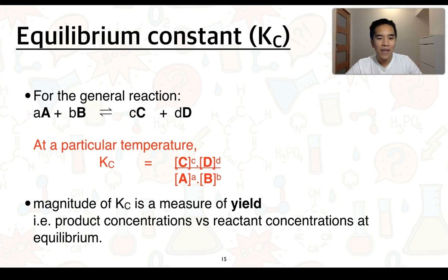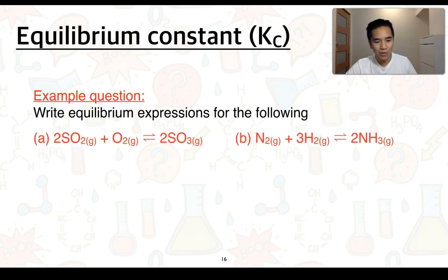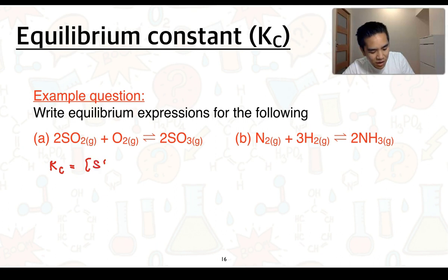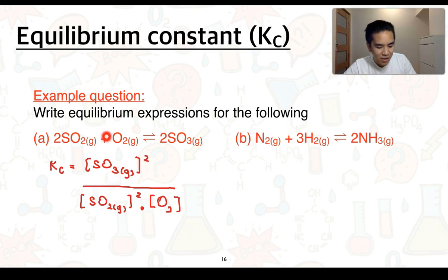The Kc value is an indication of yield — it compares product concentrations to reactant concentrations at equilibrium. For example A, the production of sulfur trioxide: Kc = [SO3]² / ([SO2]² × [O2]). SO3 is raised to the power of its coefficient 2, SO2 is raised to the power of its coefficient 2, and O2 is raised to the power of 1 (which doesn't need to be shown explicitly).